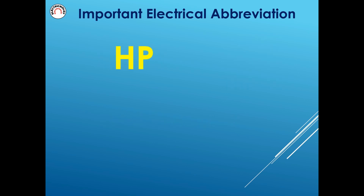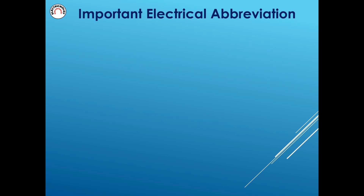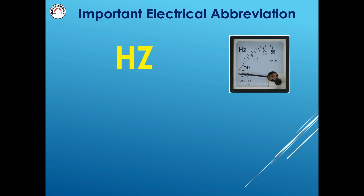HP: Horsepower. Hc: Hectare. HRS: Hours.